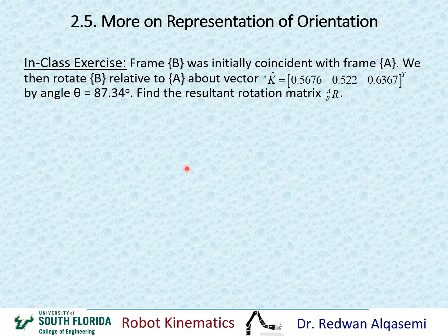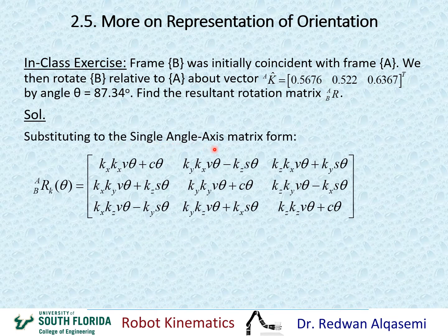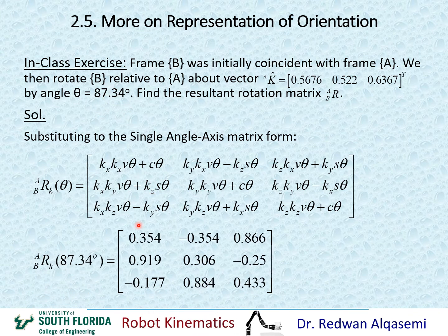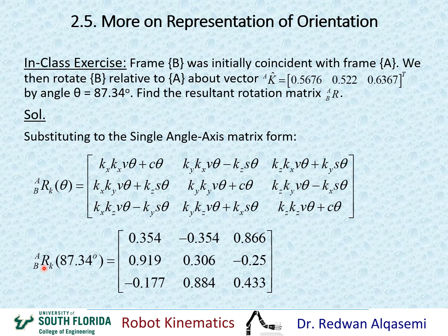Now that you're done, let's find the solution. We substitute into the single angle-axis matrix form — rotation about K by theta — using KX, KY, KZ from the given vector and theta = 87.34 degrees. Evaluating this gives us a 3×3 rotation matrix with specific elements. Please check if this matches your solution; if not, go back and review your calculations.